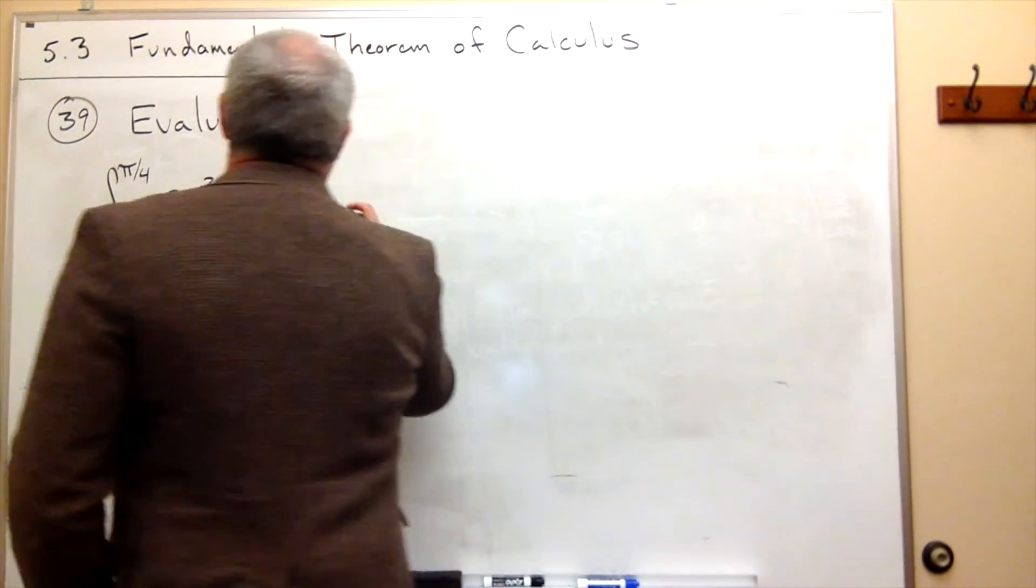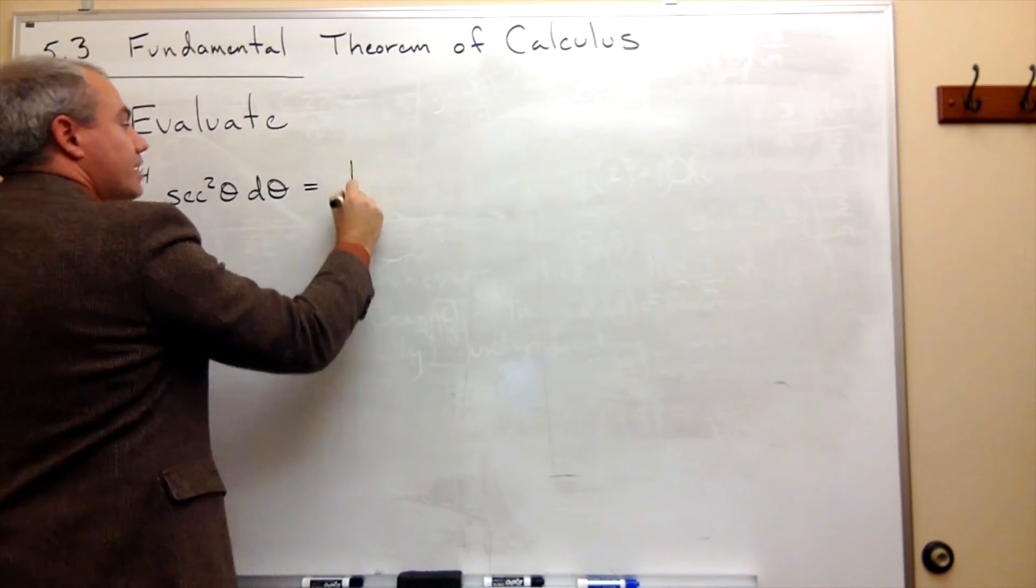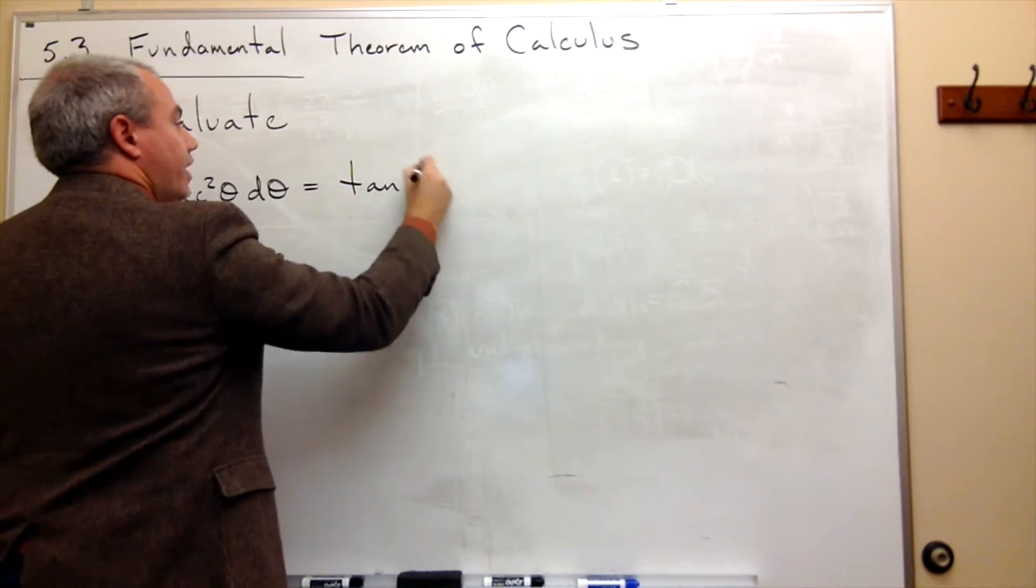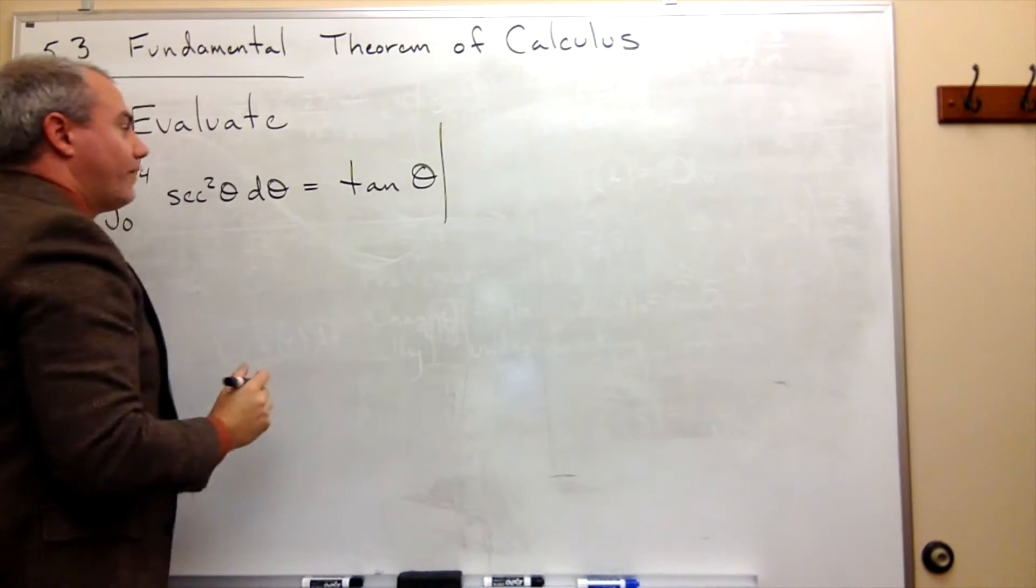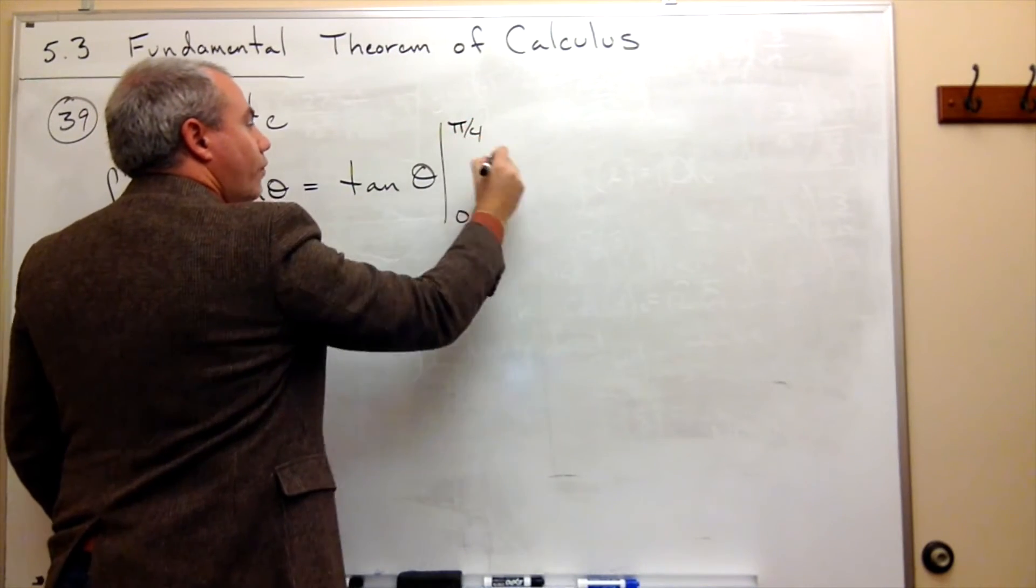So what I'm going to do is I'm going to say, okay, an antiderivative of secant squared of theta is tangent of theta. And I want to evaluate that from 0 to π over 4.